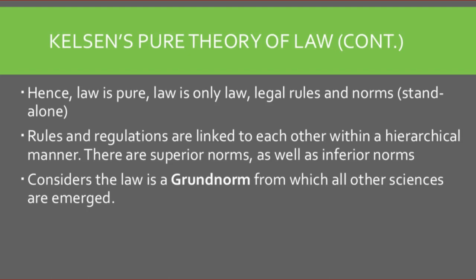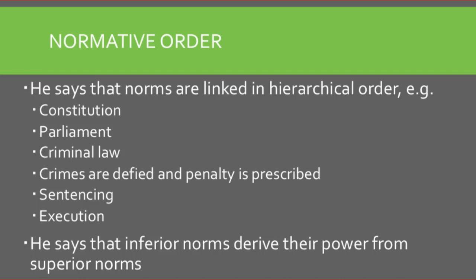What is the normative order referred to by Kelsen? He says norms are linked in a hierarchical order. At the top of the hierarchy is the constitution, from which it emanates to the parliament, to criminal law, to the crimes that are defined with prescribed penalties for any violation, and then comes sentencing and execution. Normative order means all of these are from one family — sentencing and execution are not standalone; they actually emanate from the constitution itself. Inferior norms derive their power from the superior norms.